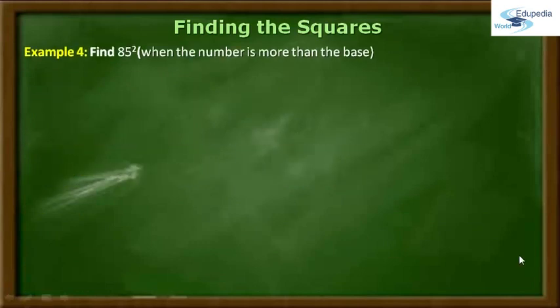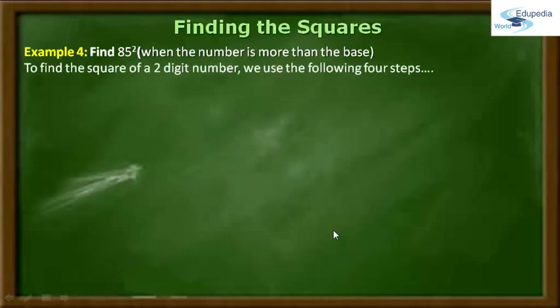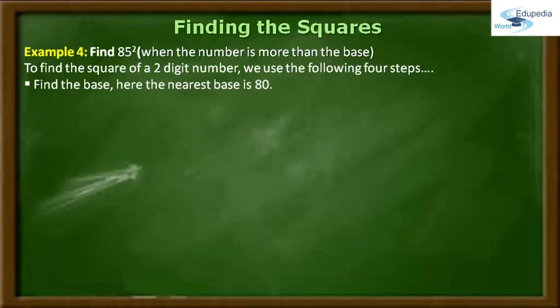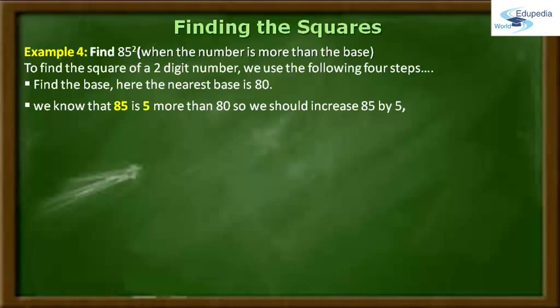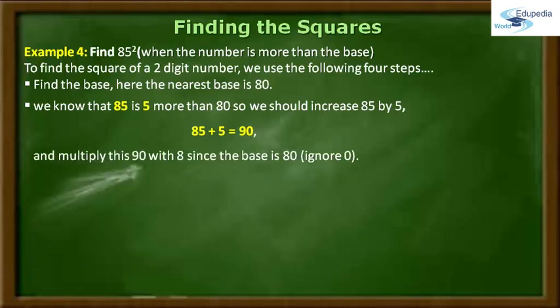In order to find the square of the given number 85, we usually follow the following 4 steps. The first step is to find the nearest base for 85, and the nearest base is 80. Moving to step number 2, the number 85 is 5 more than the base 80. So we have to increase the number 85 by 5. By adding 85 plus 5, we will get 90. Now, ignoring the zeros in the base, we have to multiply the sum 90 with 8. By multiplying 90 into 8, we will get 720 as the answer, and we have to take this as the left part of the answer.